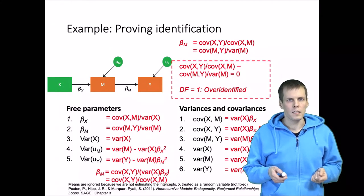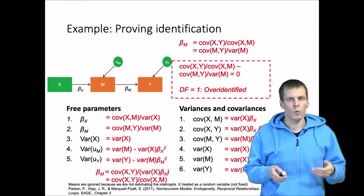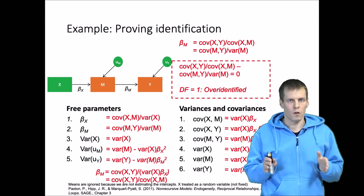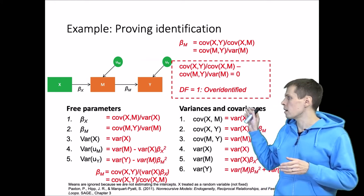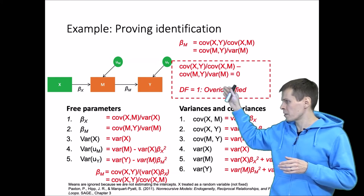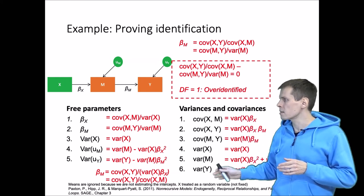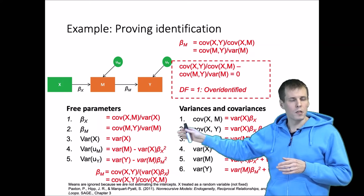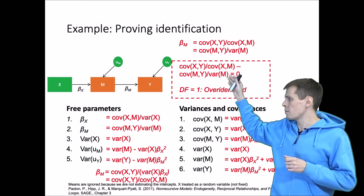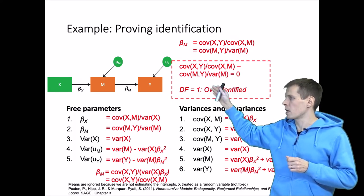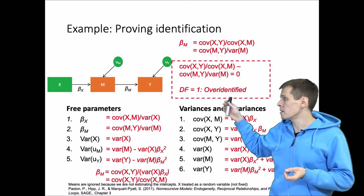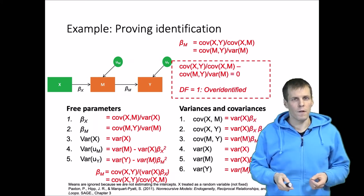The idea of model testing is that when you have an over-identified model — a model with more than zero degrees of freedom — that model implies constraints on your covariances. For example, in this example from a previous video I calculated an over-identification test. We have six variances and covariances and five free parameters, so they imply a constraint that the covariance between X and Y divided by the covariance between X and M must equal the covariance between M and Y divided by the variance of M. How we construct a test is that we take this difference and compare it to zero.